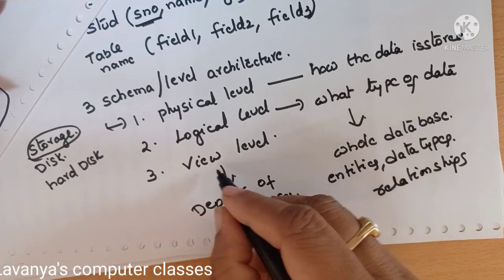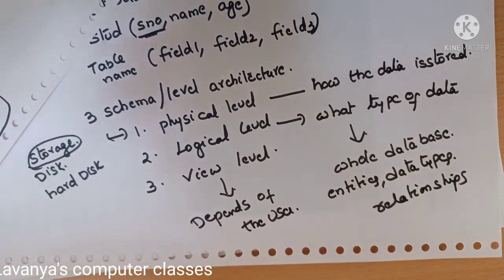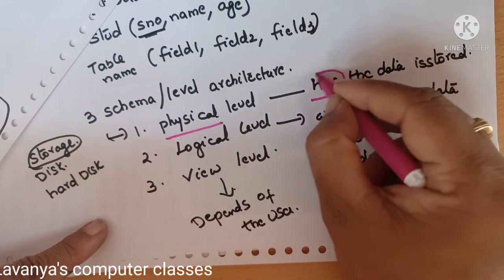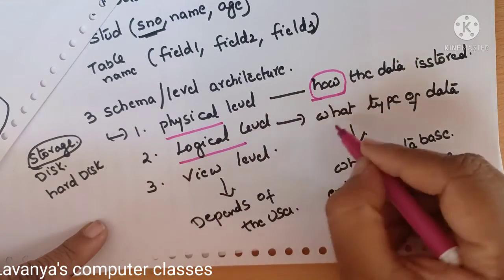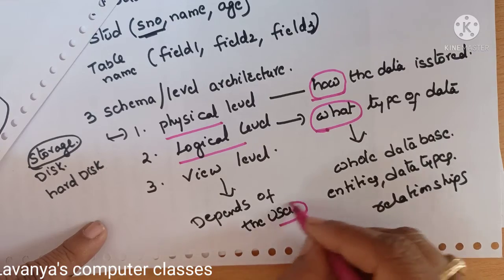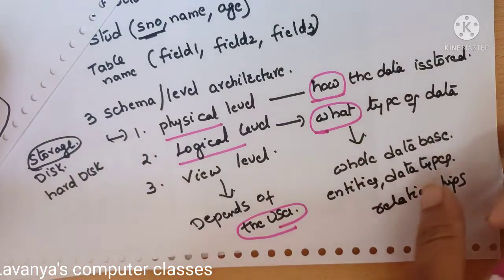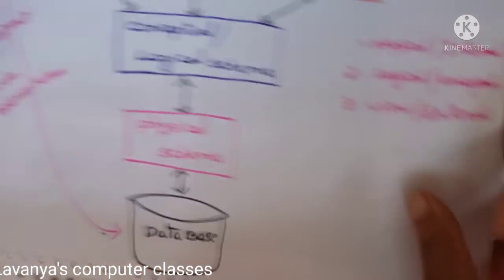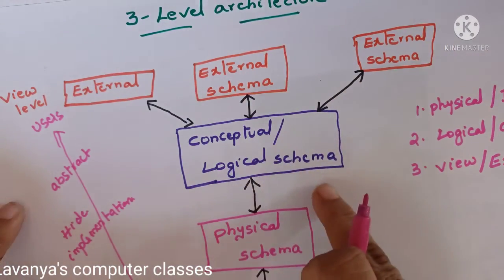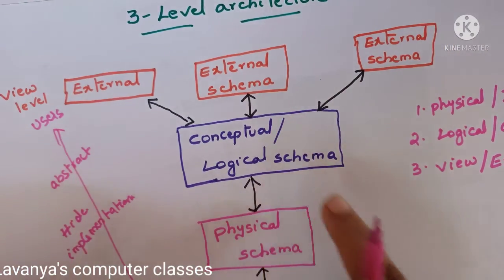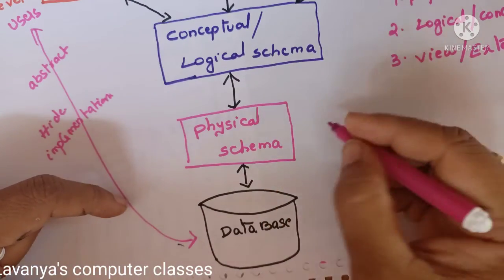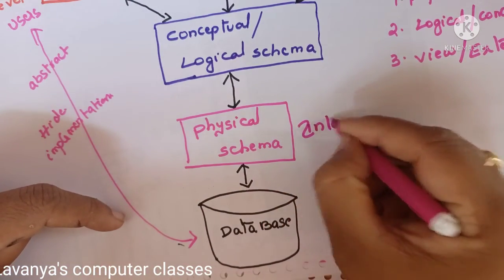Depending on user requirements, they will see the information. In the physical level, we concentrate on how and where the data is stored. In the logical level, we focus on what type of data is stored. This is the three-level architecture. The main concept of this three-level architecture is data independence.